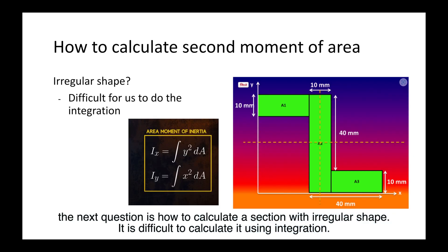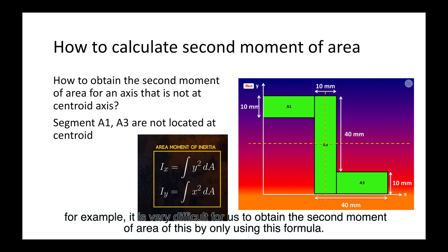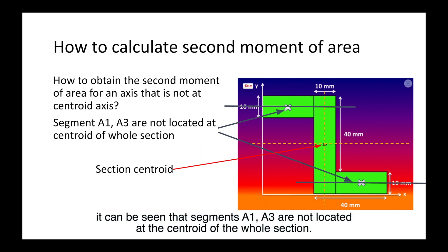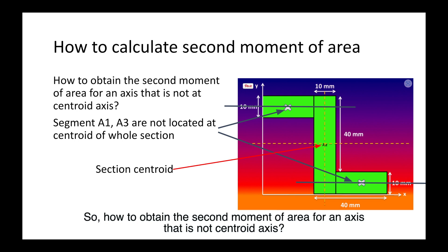The next question is how to calculate the moment of inertia for a section with an irregular shape. It is difficult to calculate it using integration directly. For example, it is very difficult to obtain the second moment of area of this shape using only the basic formula. It can be seen that segments A1 and A3 are not located at the centroid of the whole section — so how do we obtain the second moment of area for an axis that is not the centroidal axis?